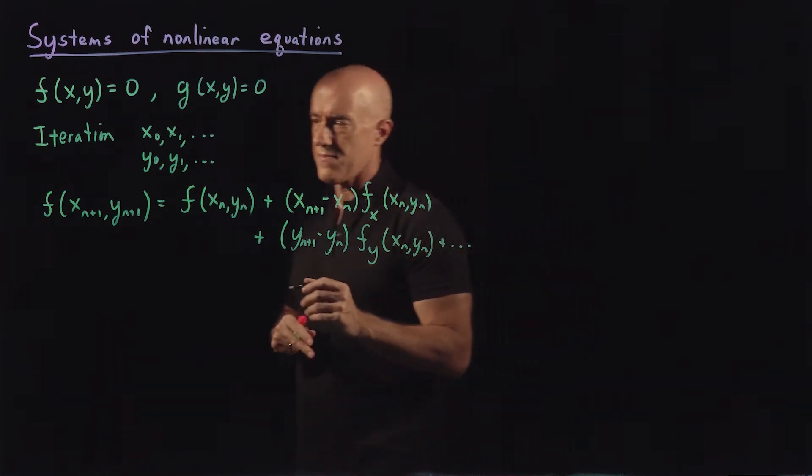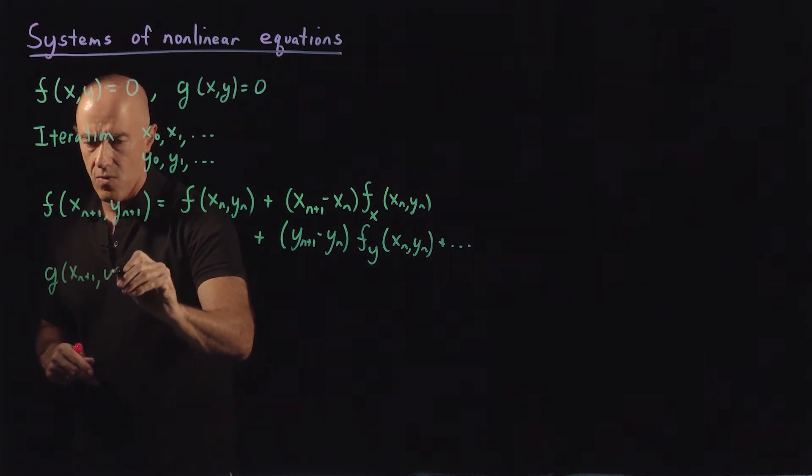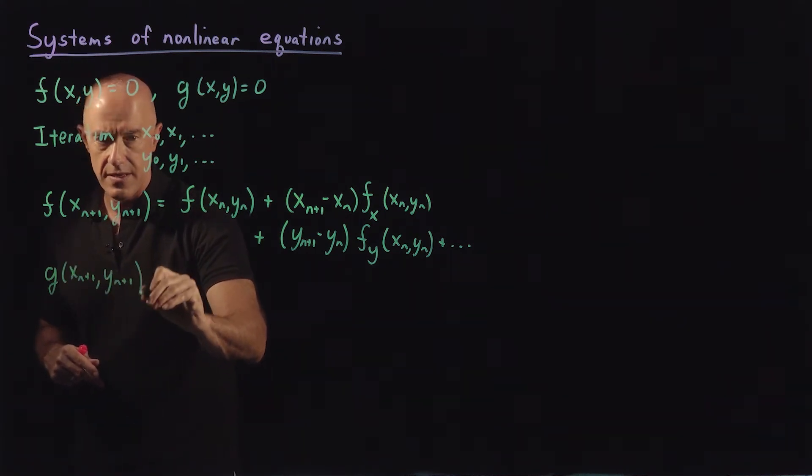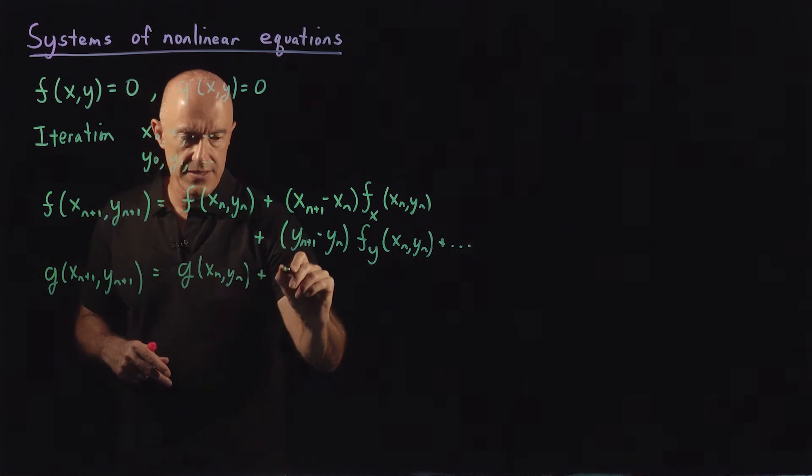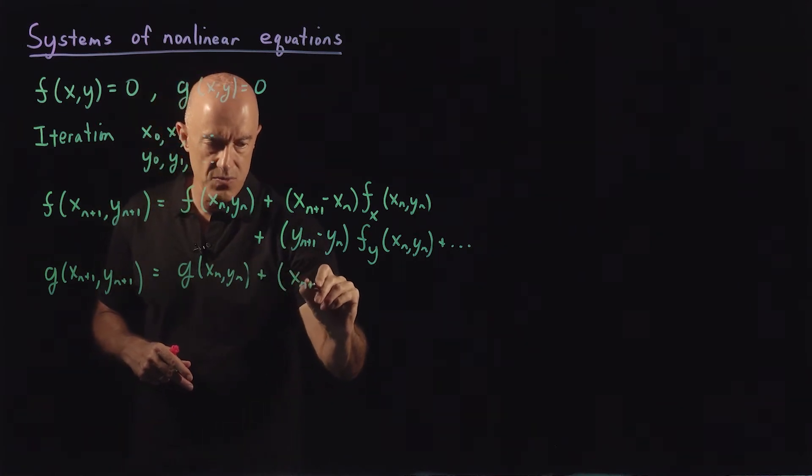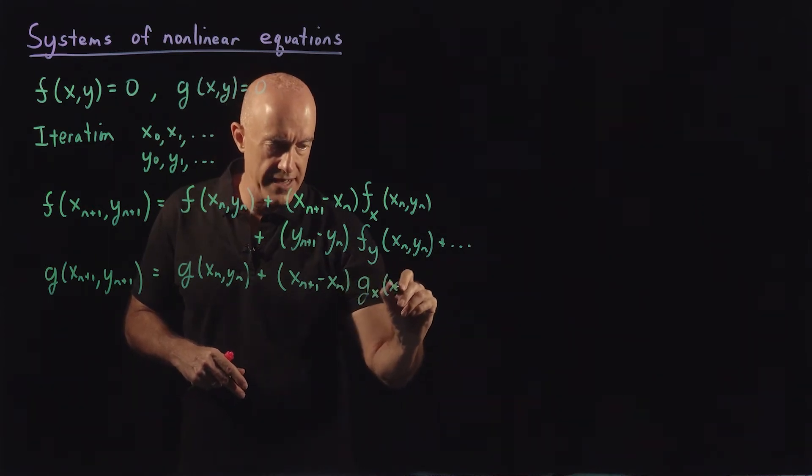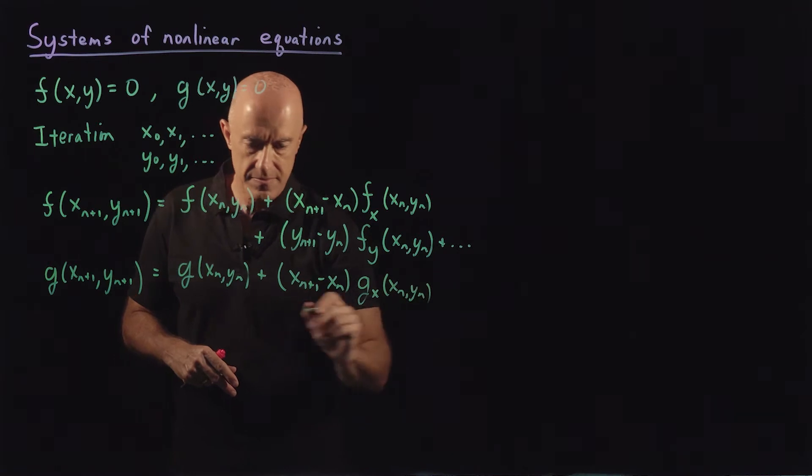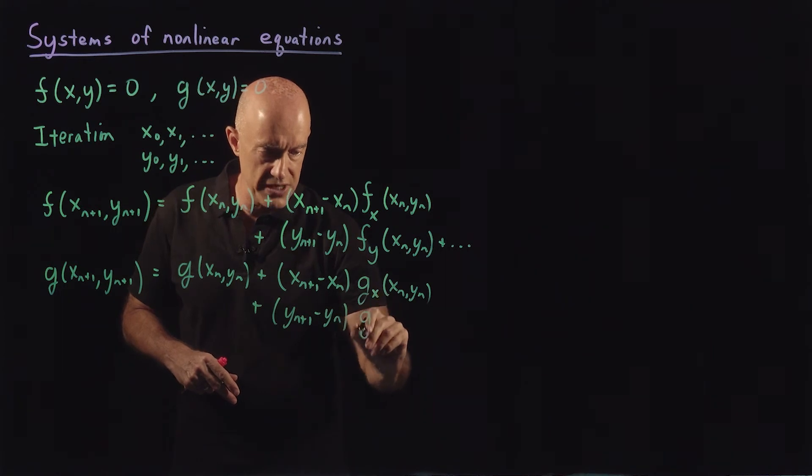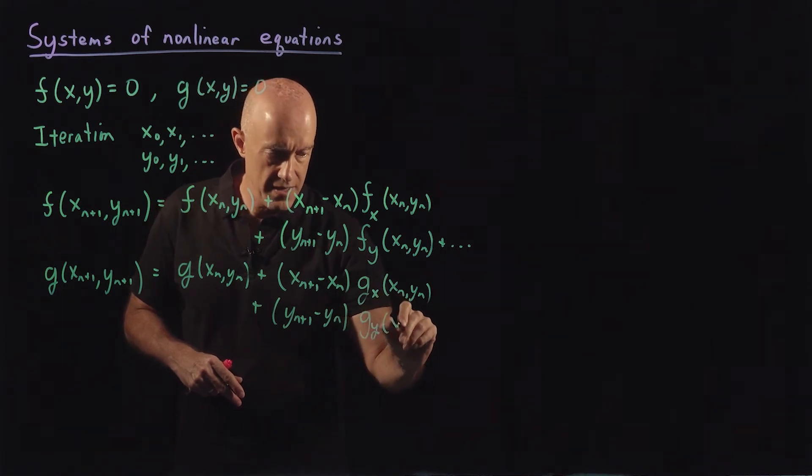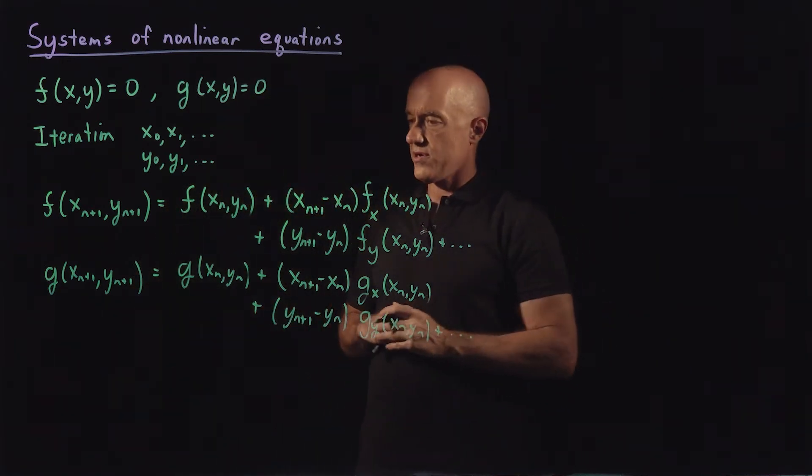We can do the same thing for g. So we have g of x n plus 1, y n plus 1, and that's equal to then g at x n, y n, plus x n plus 1 minus x n, the partial of g with respect to x of x n, y n, plus y n plus 1 minus y n, the partial of g with respect to y of x n, y n. And then I'm going to drop all of the higher order terms.